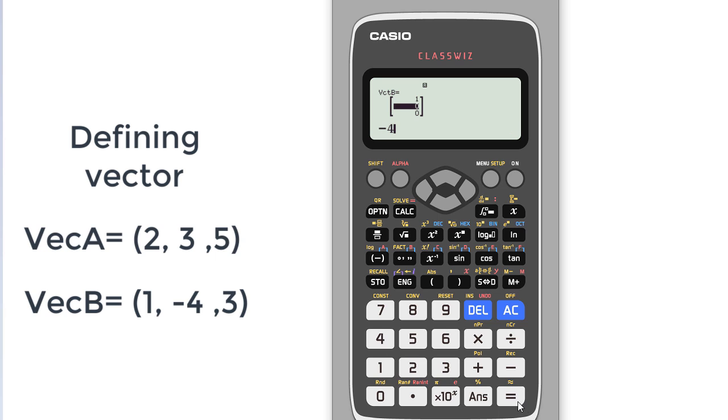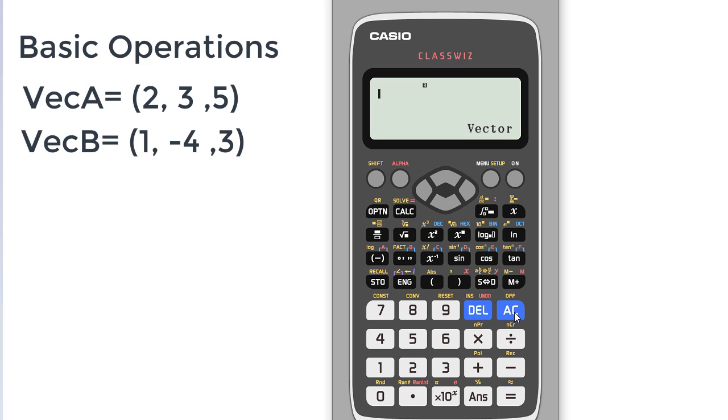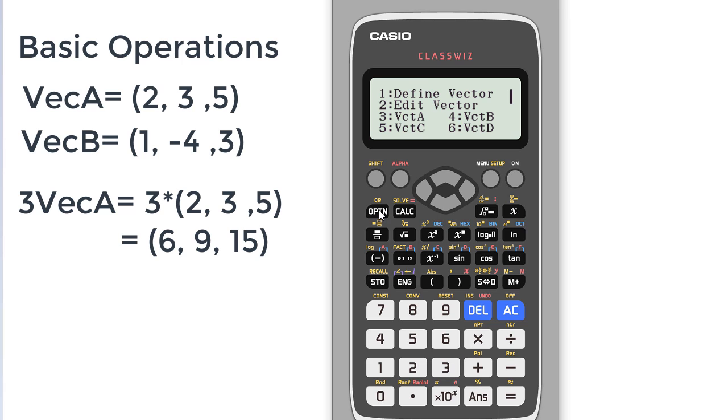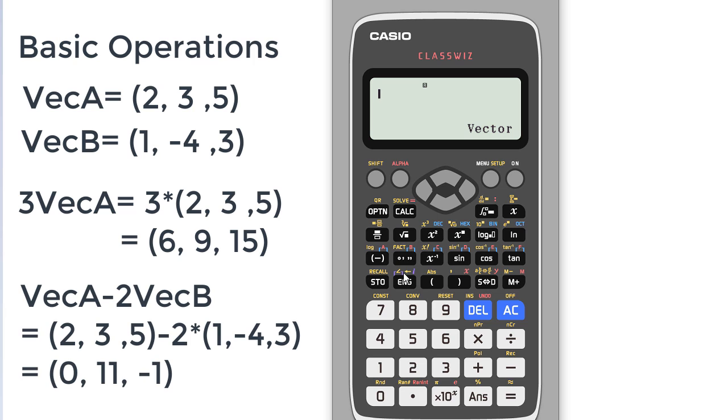Okay, so let's start the basic operations. Let's say I have to multiply vector A with 3. So I will apply 3, multiply options, and vector is at number 3. I will press 3 and this is our result: 6, 9, and 15.